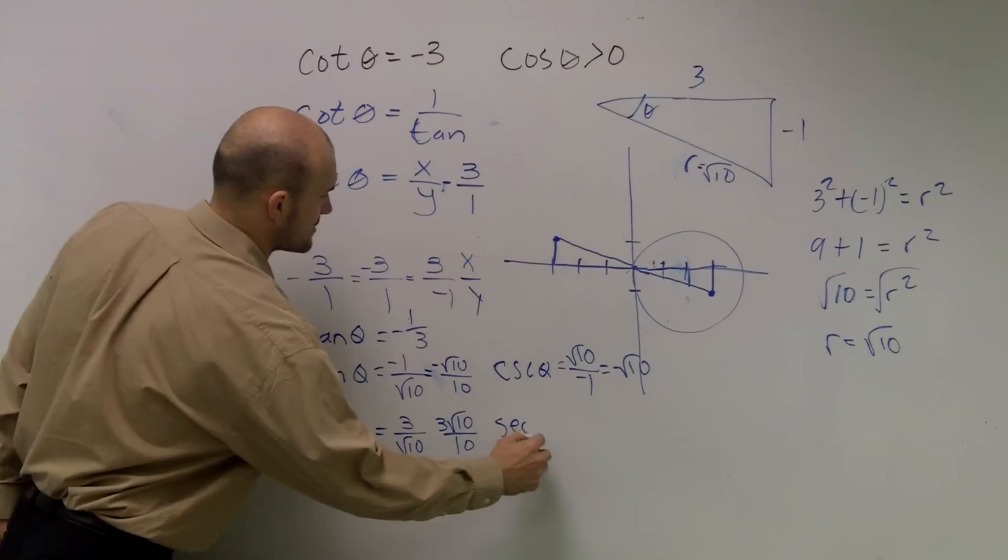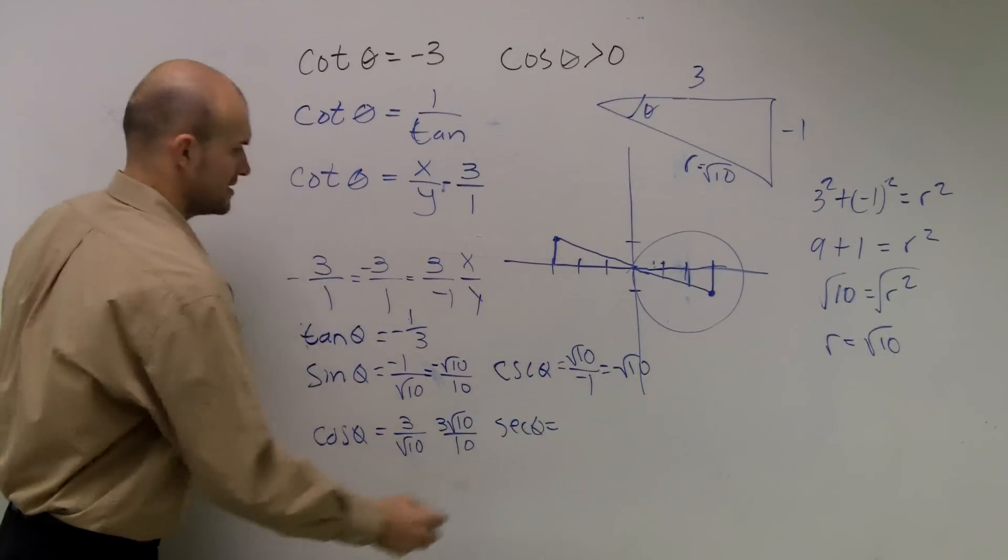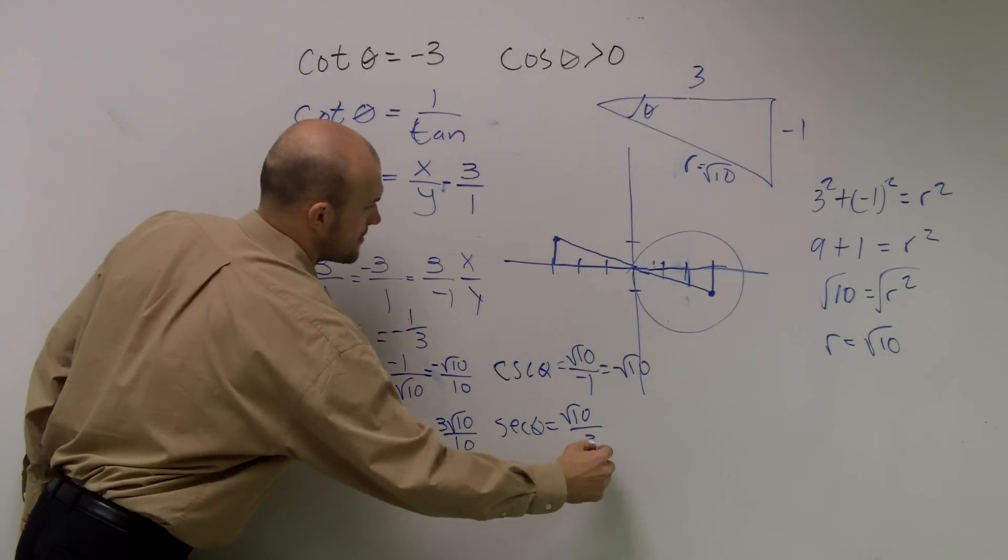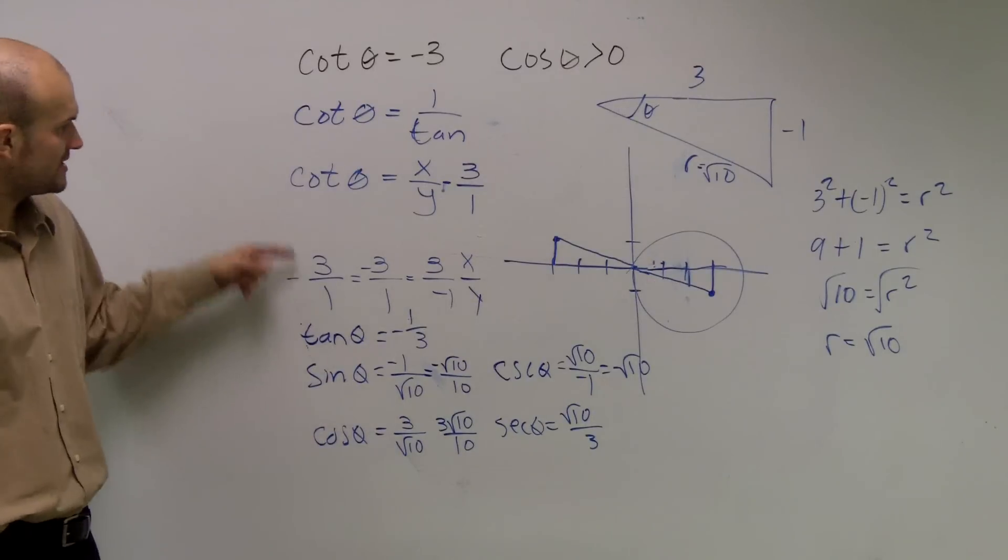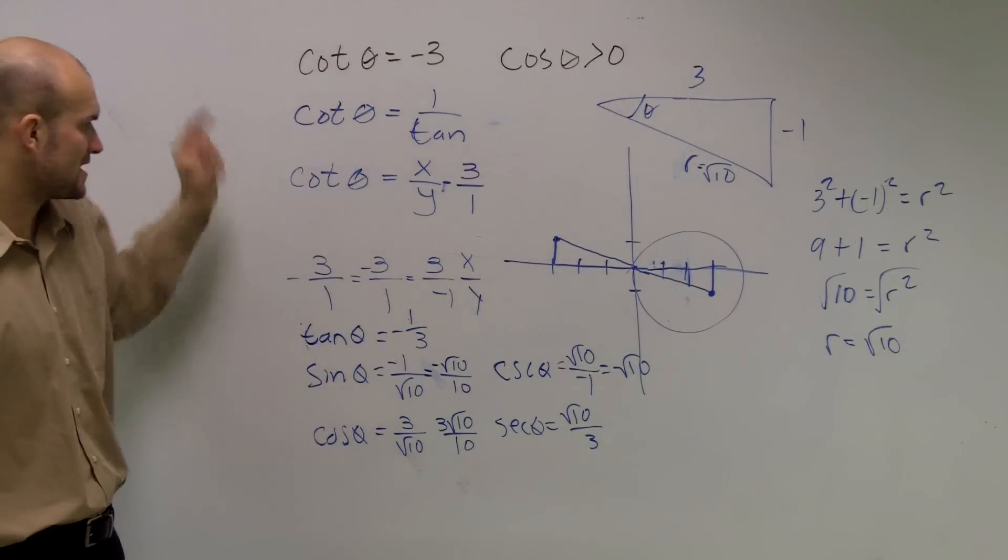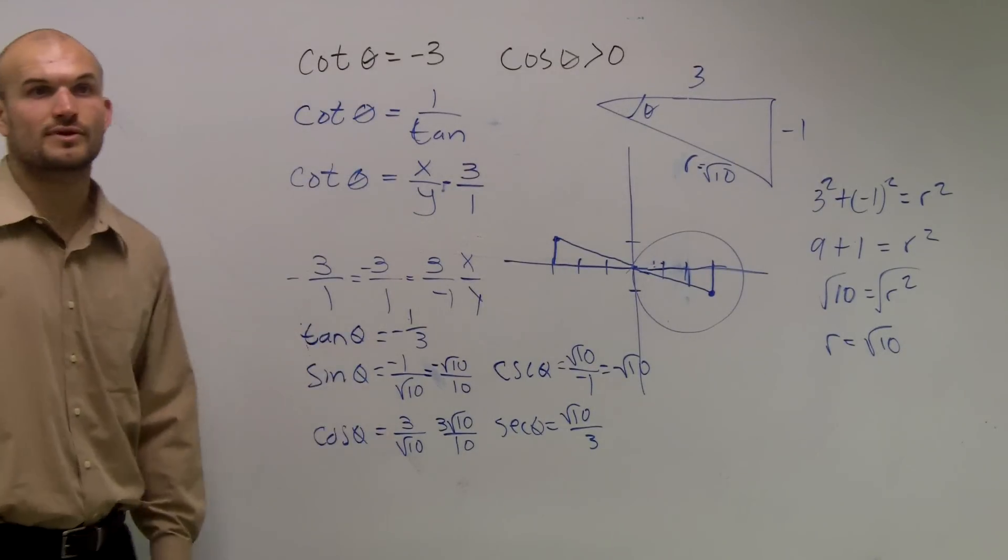Therefore, the secant of theta is going to be the reciprocal of that. And I already did. And we already know cotangent is negative 3. So therefore, tangent is negative 1 third. Alright?